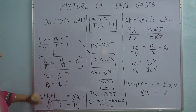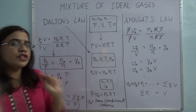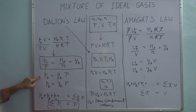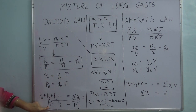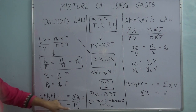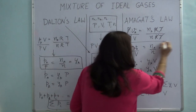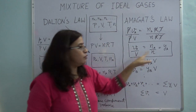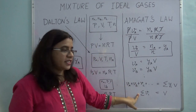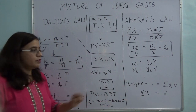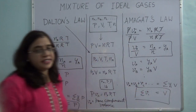So now you have seen how to derive Dalton's Law and Amagat's Law. From Dalton's Law: partial pressure = mole fraction × total pressure, and the sum of all partial pressures equals total pressure. From Amagat's Law: volume fraction equals mole fraction for ideal gases, and the sum of all pure component volumes equals the mixture volume.